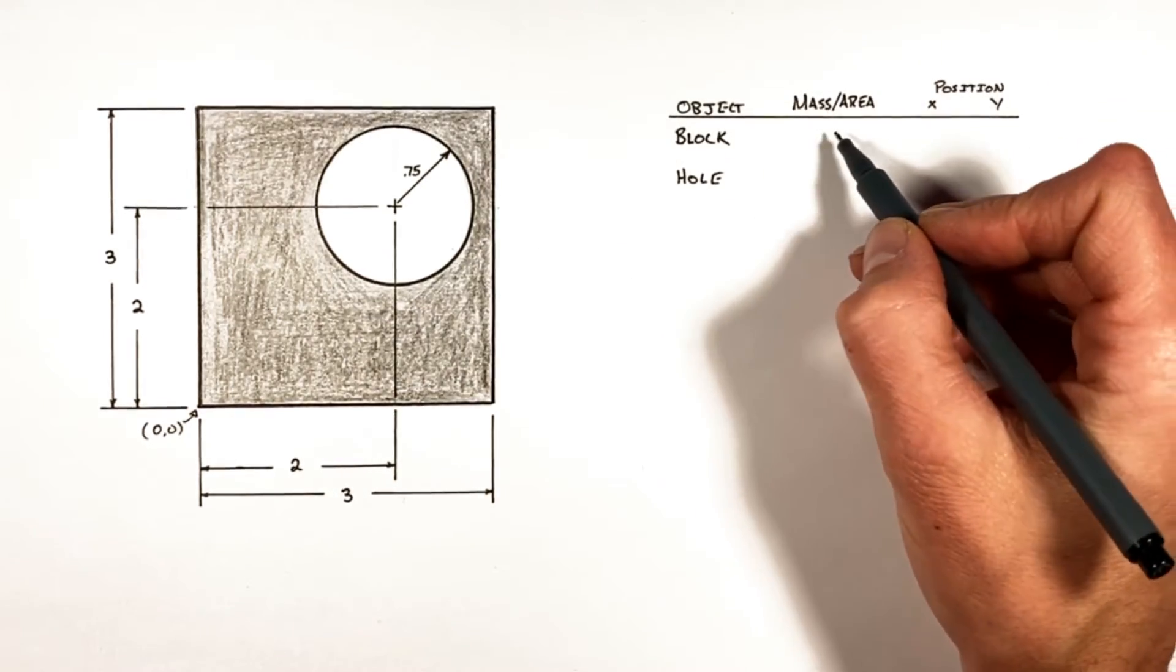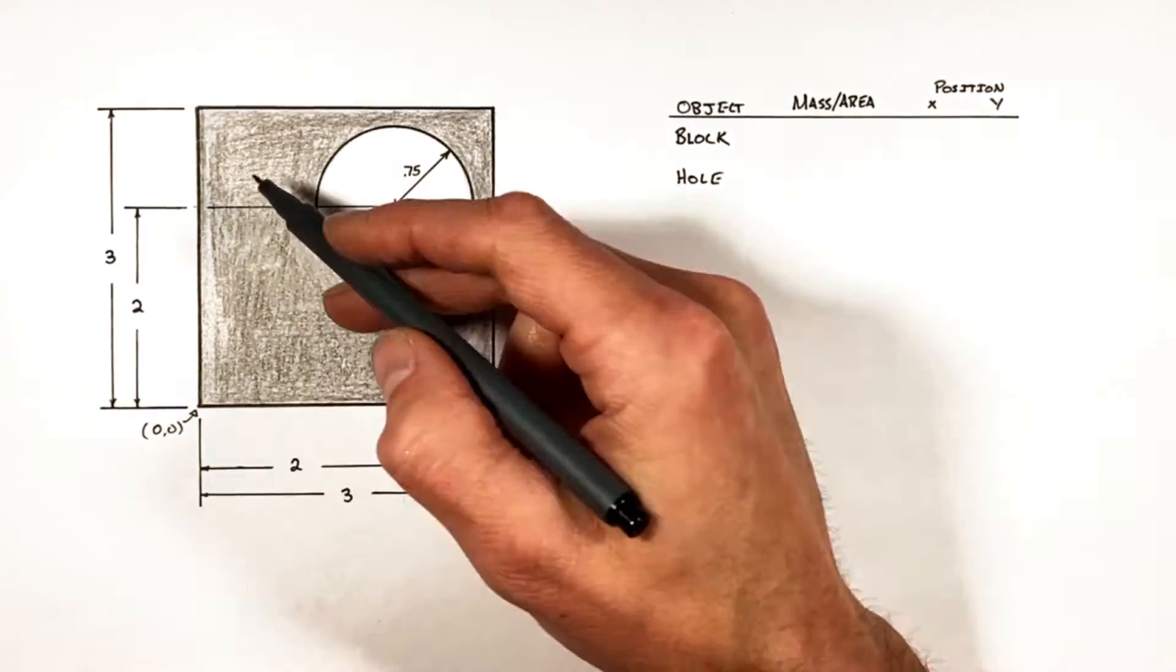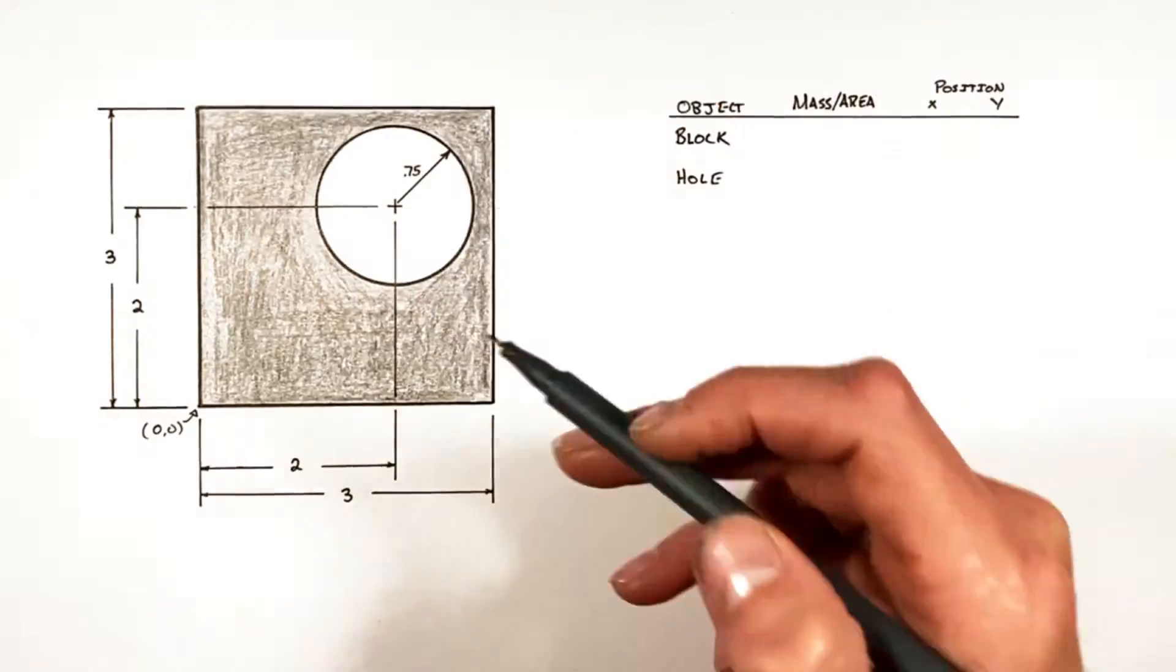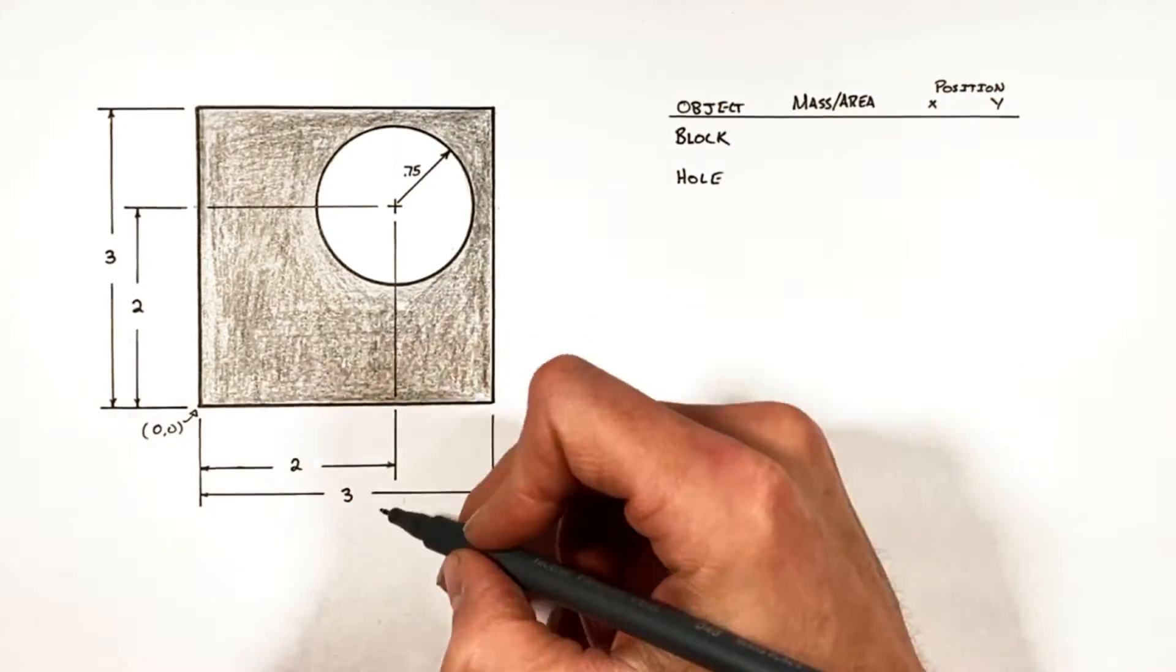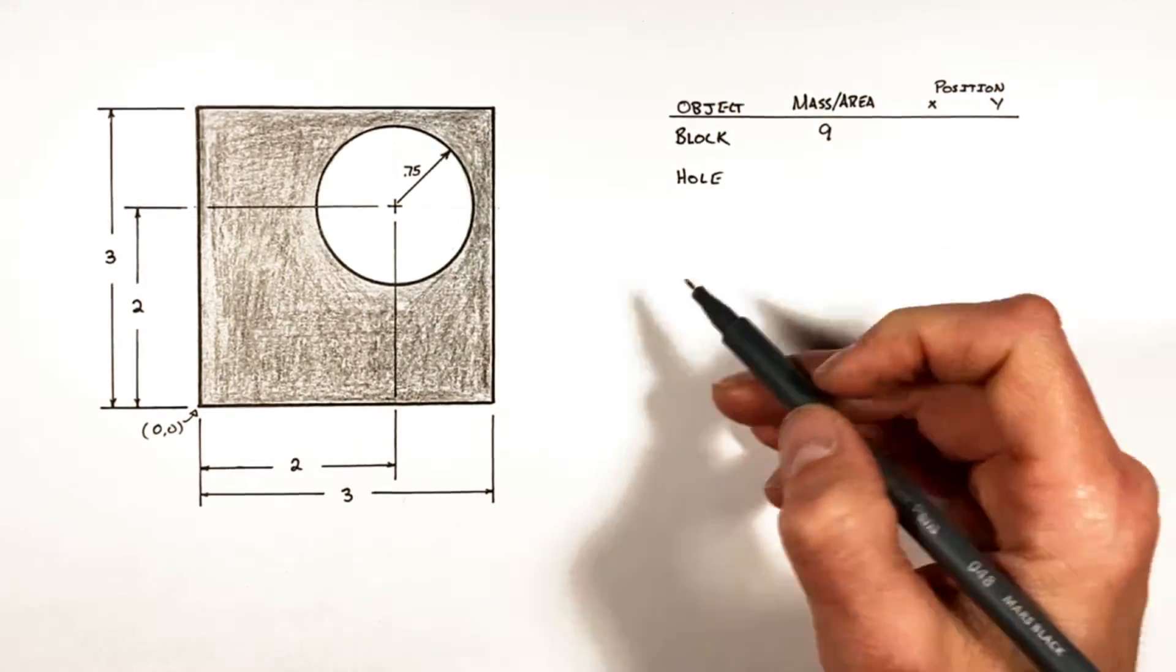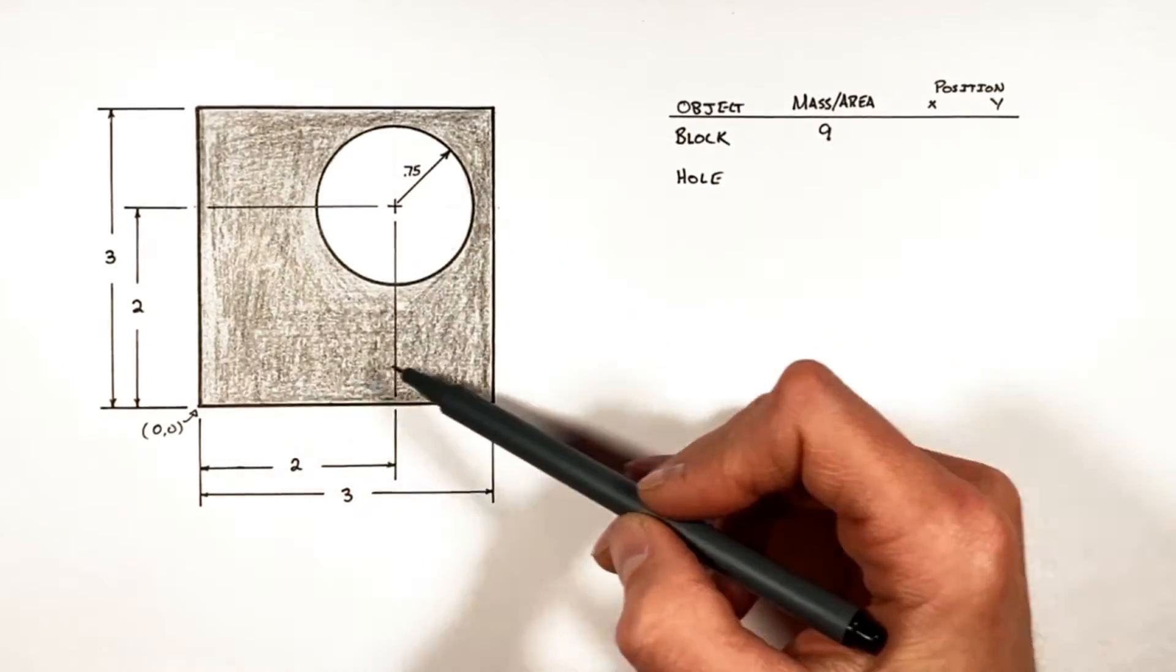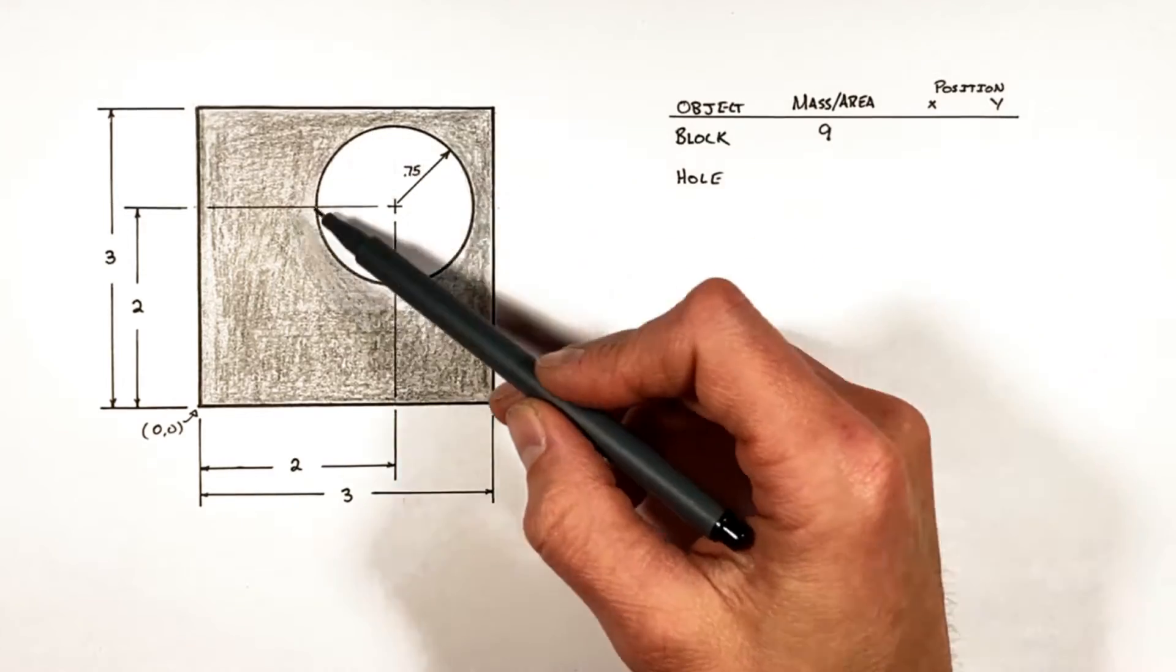Looking at this term here for our area, the area of the block is simply going to be the base of the block multiplied by the height. That's 3 times 3, which is 9. Now I know it's tempting to want to consider this hole here, but what we're first doing is looking at just the block as if there was no hole. We'll worry about the hole later.